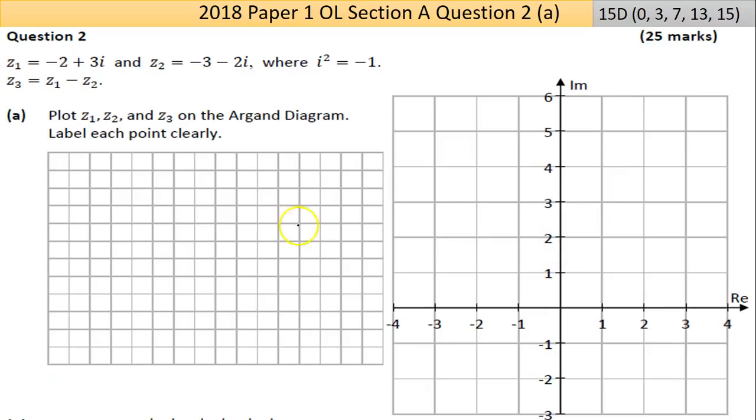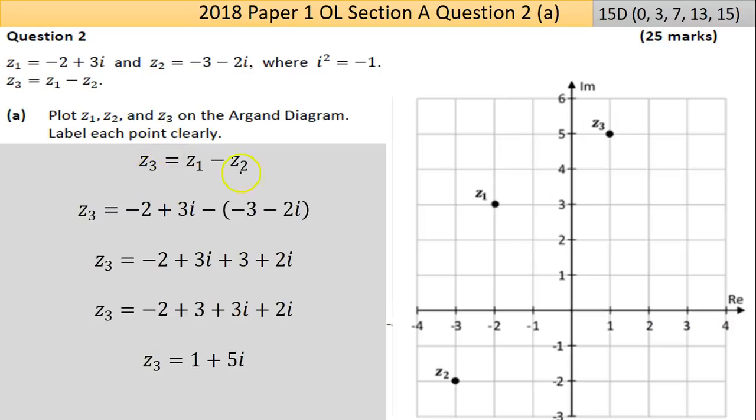Here you see the imaginary axis, you have your real axis, and you have the grid lines built in. Let's find out what Z3 is. Z1 would be -2 on the real axis and +3i on the imaginary. Z2 would be -3 - 2i, so -3 on the real axis and -2 on the imaginary axis. You have to take those two away.